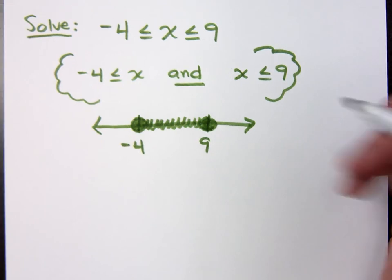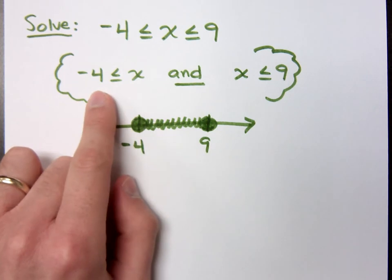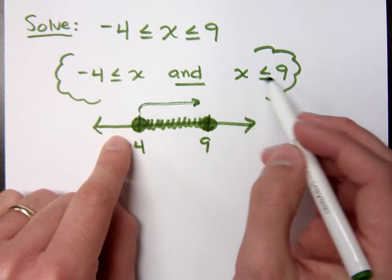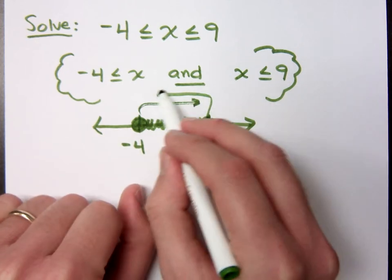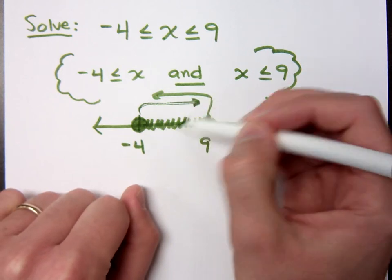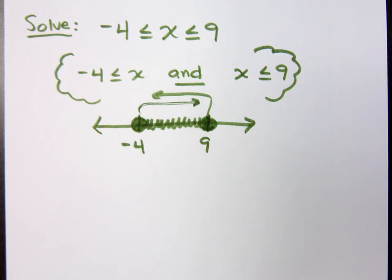You can see if you graph these guys, if you graph each of them separately, x greater than or equal to negative 4 would have been negative 4 out to the right. Less than or equal to 9 would be 9 going out to the left, and where would they have intersected? Right here in the middle. Do you all agree? How do you write this using interval notation?